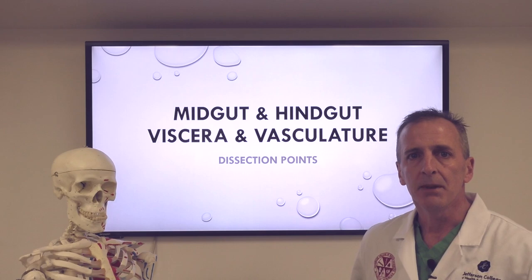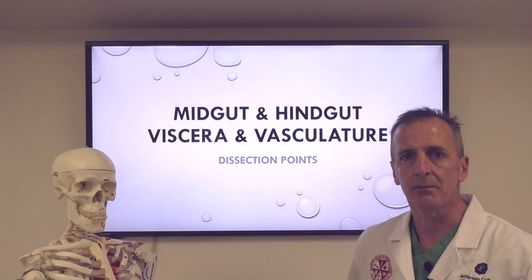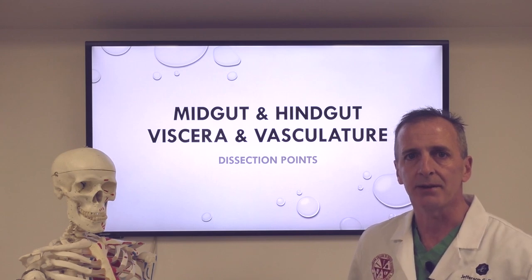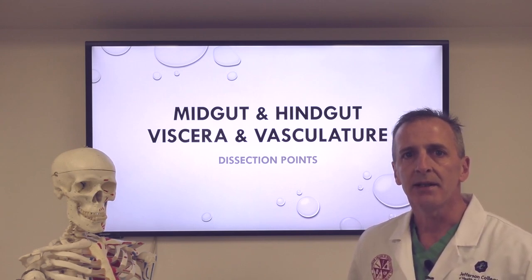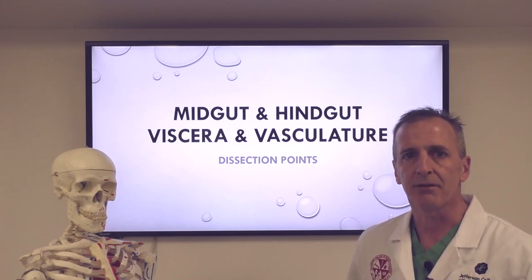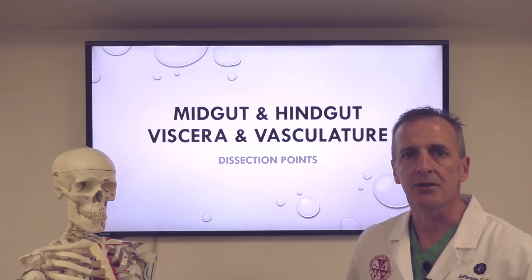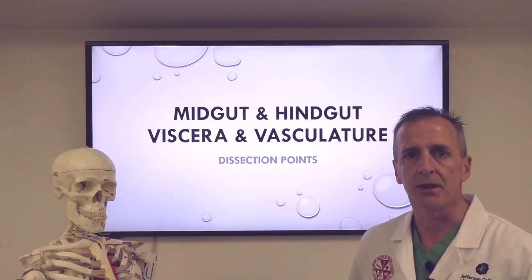The midgut begins at the level of the entry of the common bile duct and pancreatic duct into the duodenum, then ends at approximately the splenic flexure of the large intestine. The hindgut then begins at that point and continues down to the majority of the rectum.